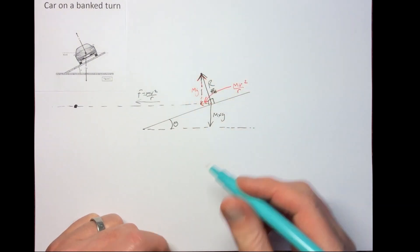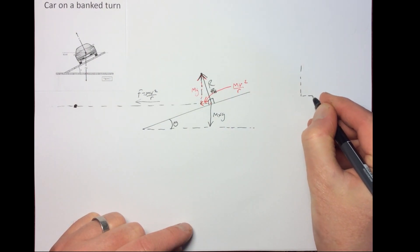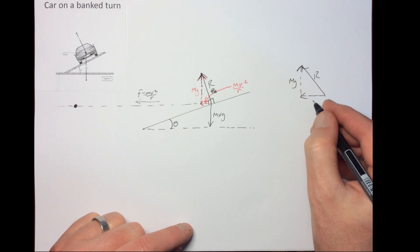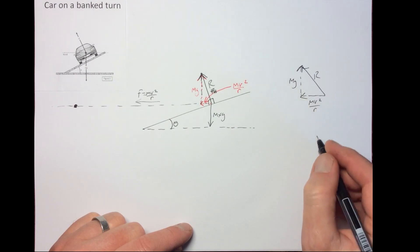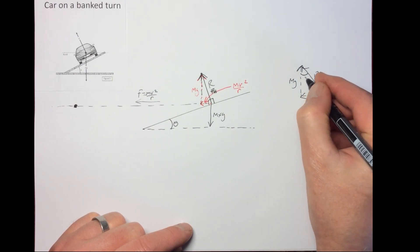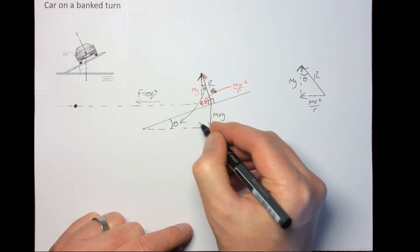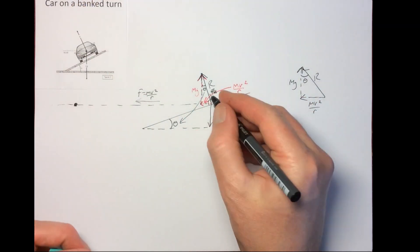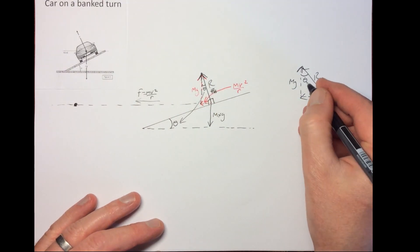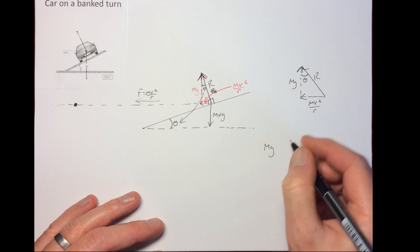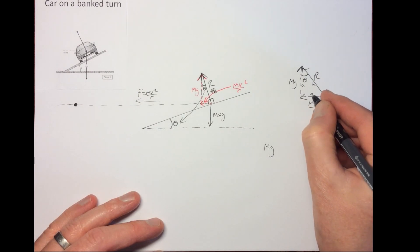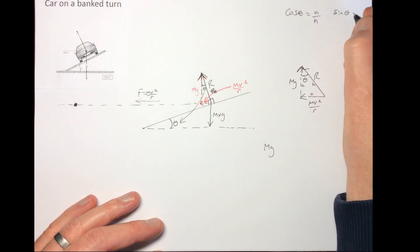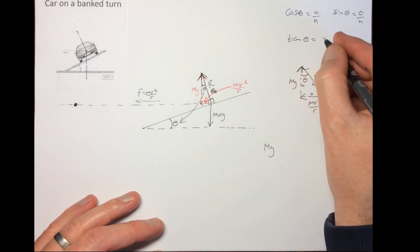If you redraw this diagram, you have the horizontal component, the vertical component, and the reaction force R. We know the vertical component equals mg and the horizontal component equals mv²/r. The angle here is theta — the same angle as on the original diagram. Basically what we've got is this triangle pivoted into that position, so theta is the angle there. According to trigonometry: this side is adjacent, this is the hypotenuse, and this is opposite.